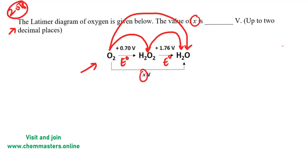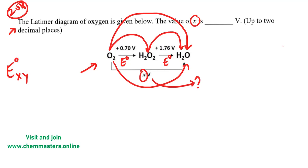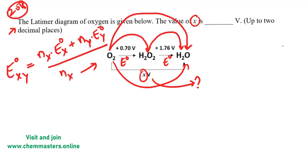We need to find the value of the standard reduction potential for the complete conversion of O₂ to H₂O. Here we have an equation to find the answer within seconds: E°(xy) equals (nx × E°x + ny × E°y) divided by (nx + ny), where n indicates the number of electrons involved in each reaction.